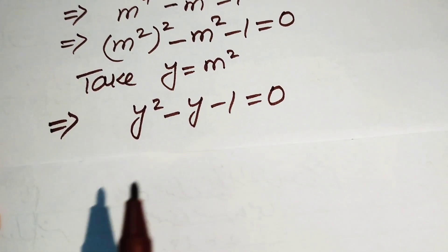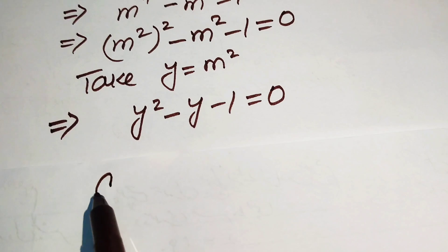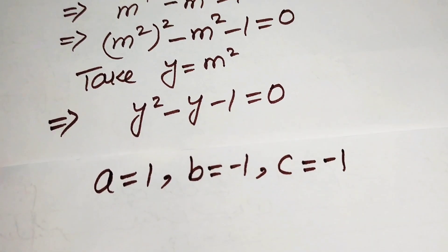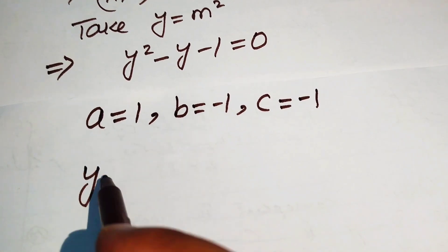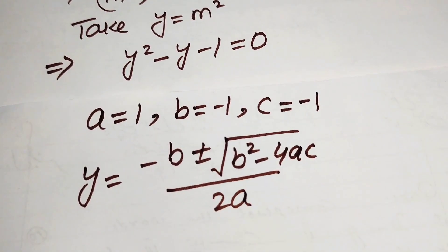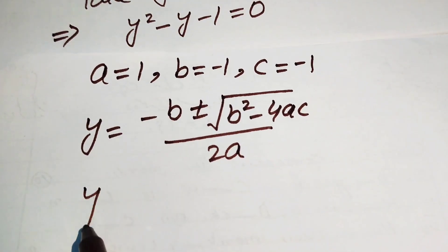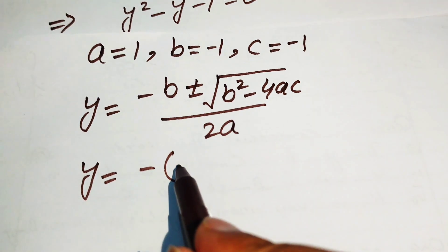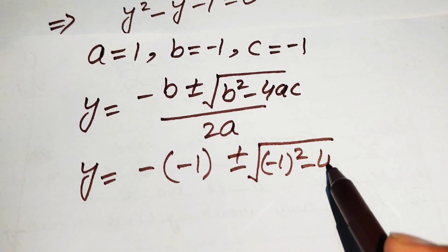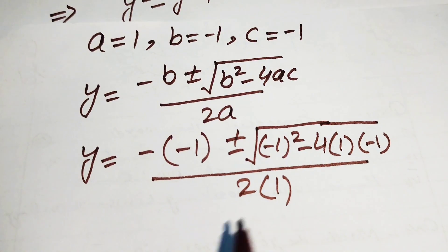To solve this quadratic equation, we use the quadratic formula. The coefficients are a equals 1, b equals minus 1, and c equals minus 1. The quadratic formula is y equals (minus b ± √(b² minus 4ac)) divided by 2a.